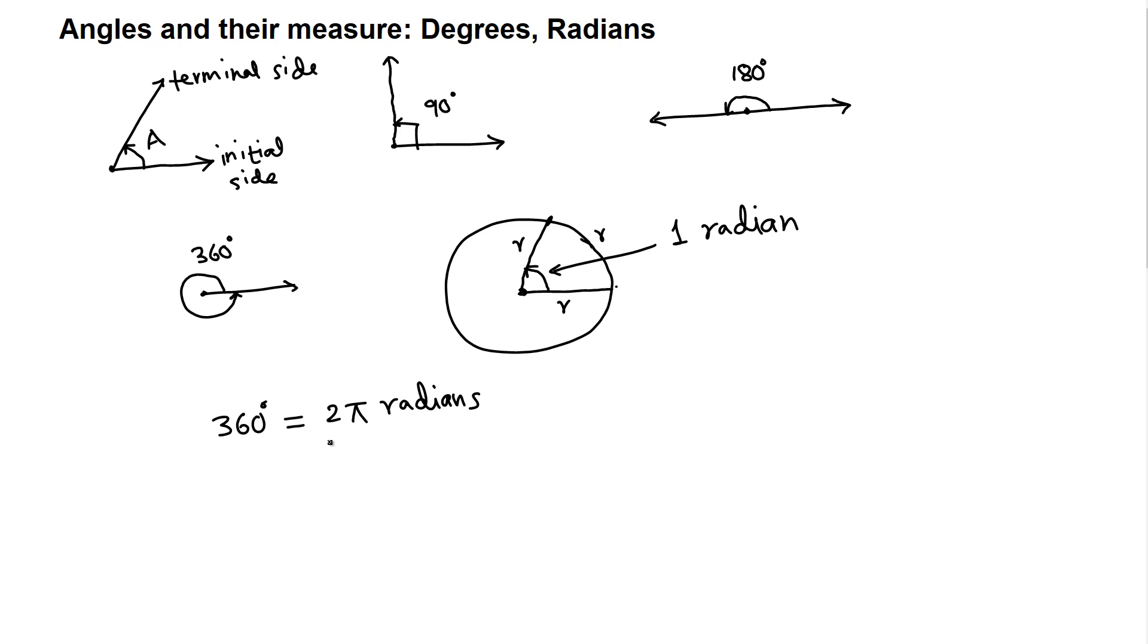If we divide both sides by 2, we get 180 degrees, that's one half revolution, equals π radians. Divide both sides by 180, then we get 1 degree equals π over 180 radians.